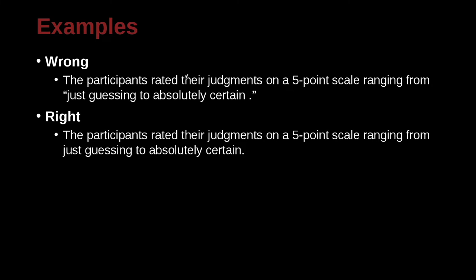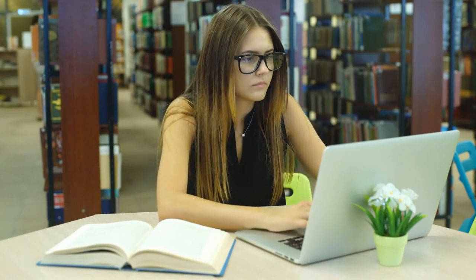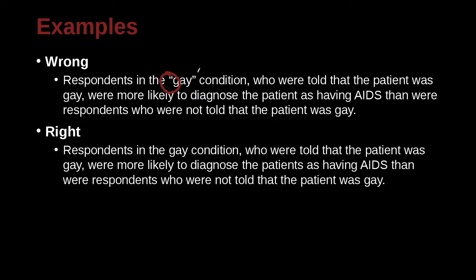The participants rated their judgments on a five-point scale ranging from 'just guessing' to 'absolutely certain.' Here we have quotation marks — and remember, avoid error quotation marks. Just write out what you mean and what they said or reported. For example: 'Respondents in the gay condition' — what does 'gay' in quotation marks mean? We don't need the quotation marks. We're just going to use the word gay clearly for whatever our situation is. If you feel you need to explain what the gay condition is, then explain it in another paragraph or sentence. You don't need quotation marks.